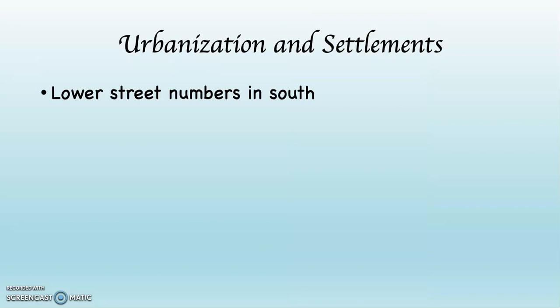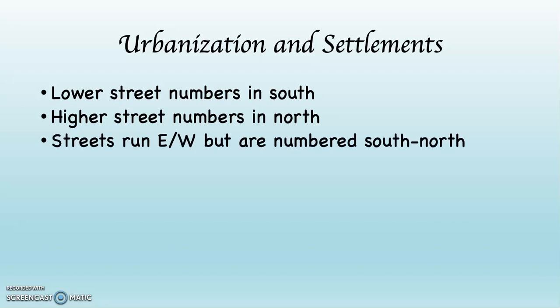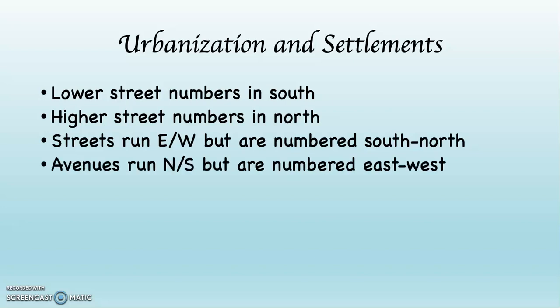The lower the street numbers are, the further south they are on Manhattan Island. New York is set up mostly in a grid pattern — north, south, east, west. The streets run east-west but are numbered from south to north, and the avenues run north to south but are numbered from east to west. This is why you could be in New York and somebody asks where you are and you say, 'I'm on 45th and 3rd' — meaning 45th Street and 3rd Avenue. That's the way people discuss where they are in New York.